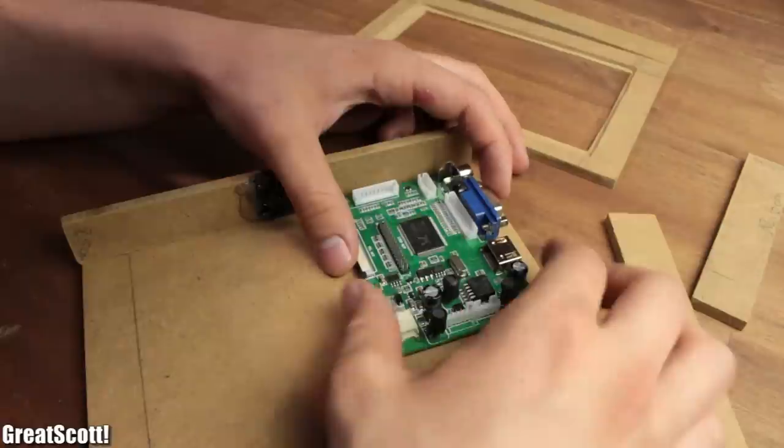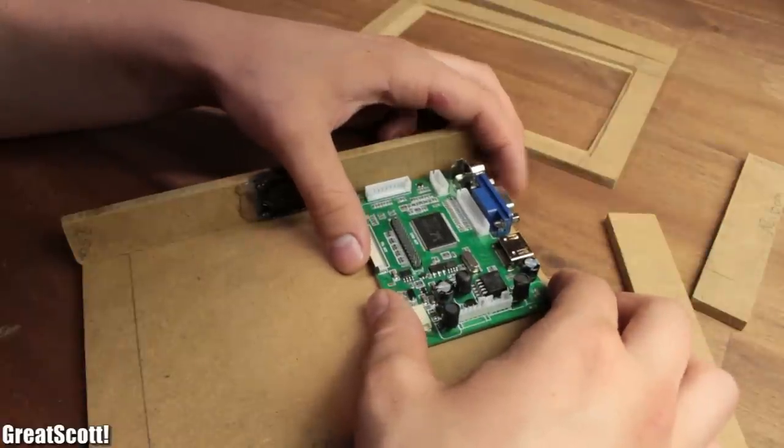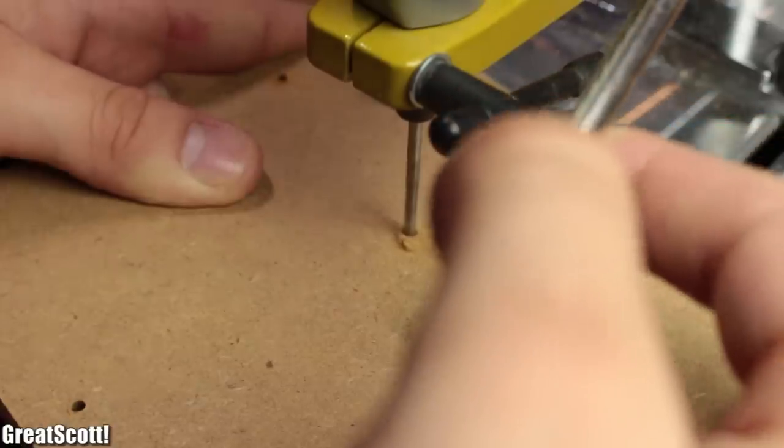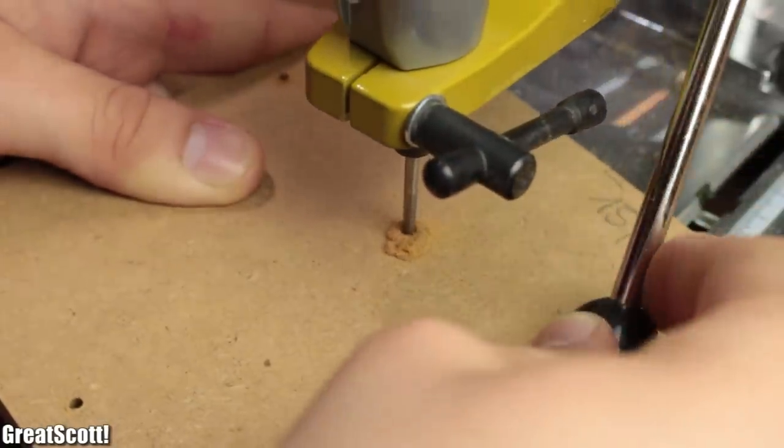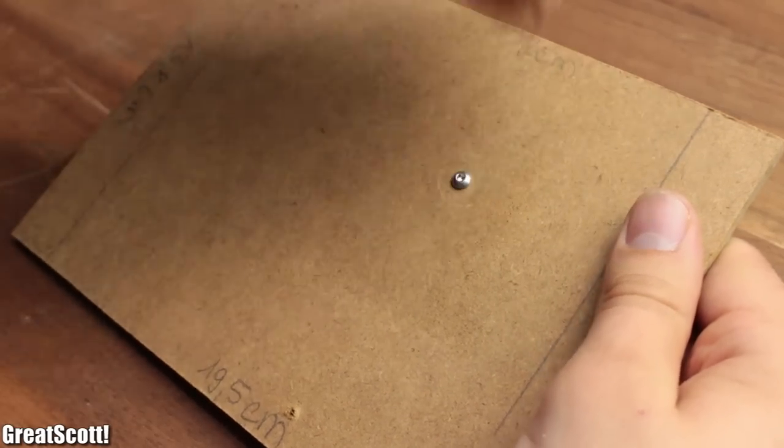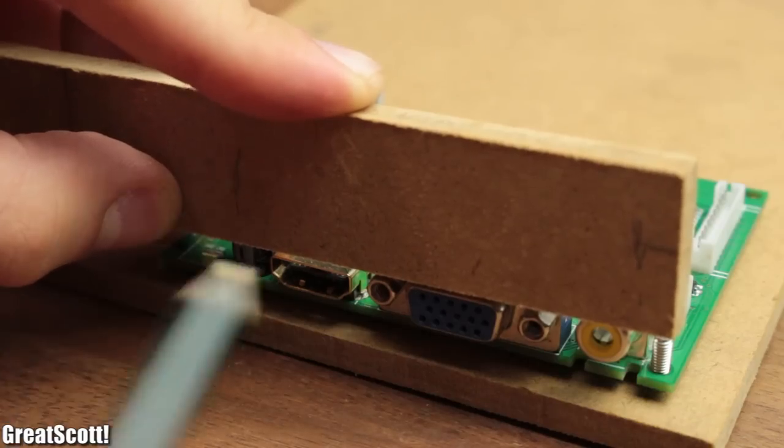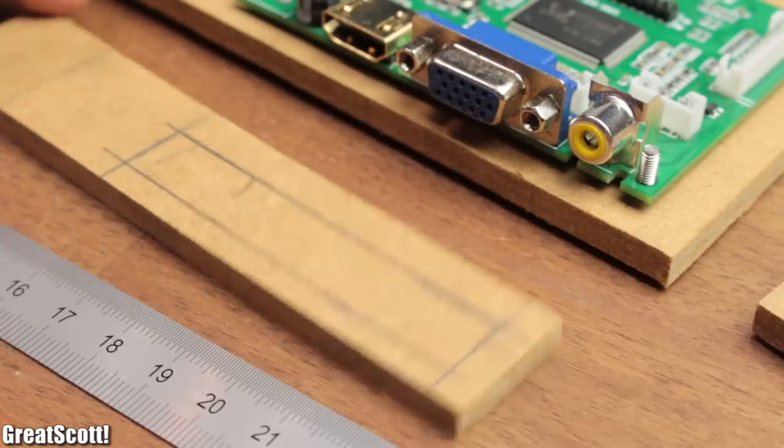Next I searched for a nice spot for my driver board in the bottom left corner of the back plate, marked the necessary holes and used my rotary tool to create them. After I secured the driver board with bolts and nuts to the plate I marked the position of the signal input cutout on my left wall piece.